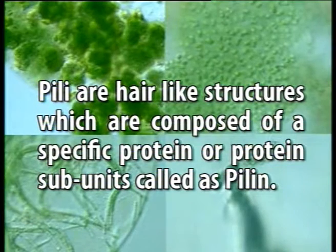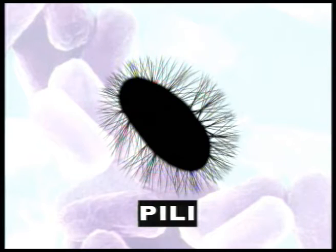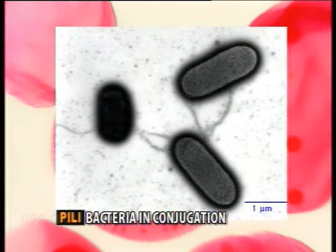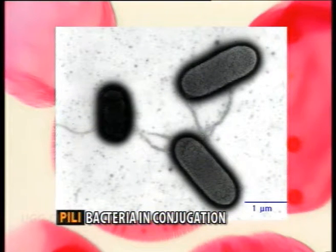Related to flagella are pili — hair-like structures composed of a specific protein called pilin. They are hollow, non-helical, tiny filamentous appendages that are thinner, shorter, and more numerous than flagella. Unlike flagella, pili are not involved in movement; their function is to allow attachment of the bacterium to other bacteria and to surfaces. They also facilitate conjugation, allowing genetic material to pass from one bacterial cell to another. Those that help in attachment are called attachment pili or fimbriae, while those involved in genetic transfer are called sex pili.